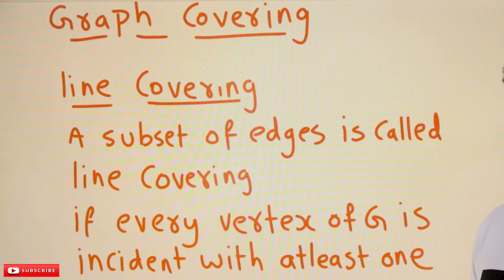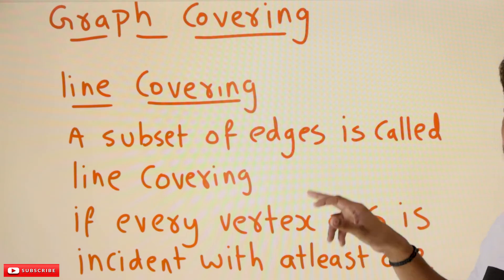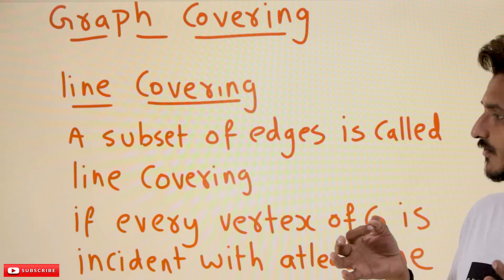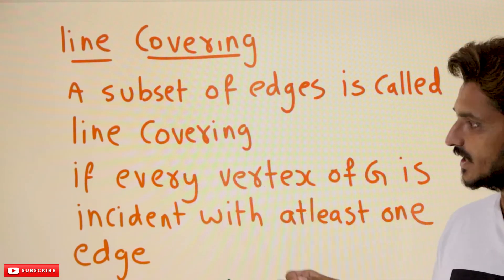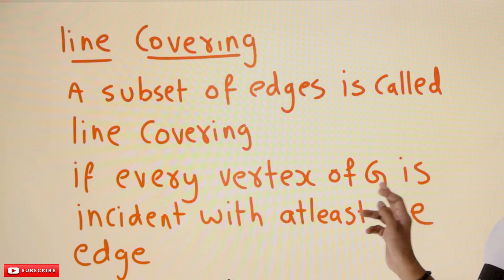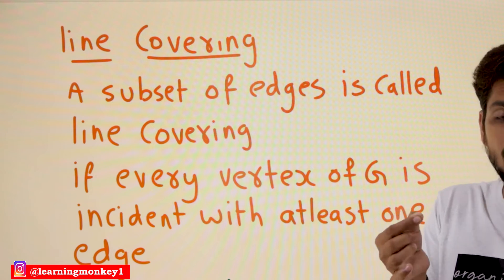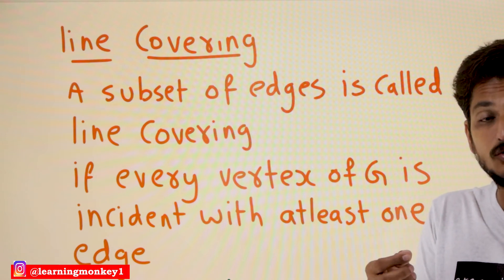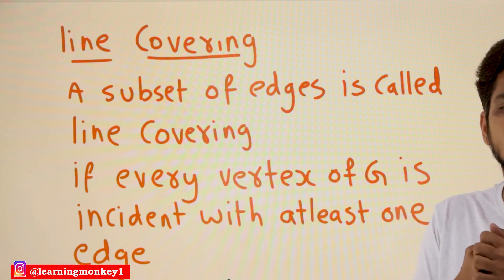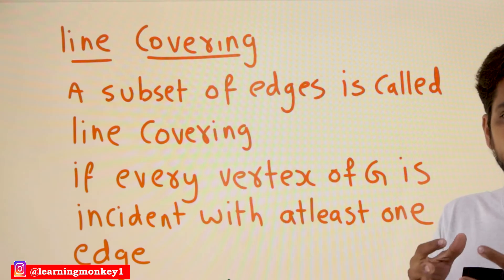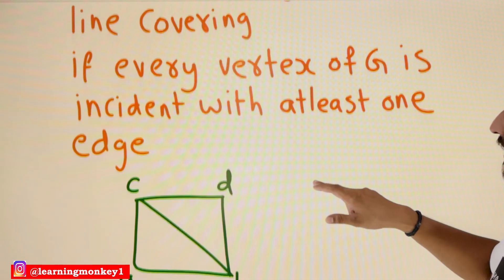Now the next concept: what does graph covering mean? We have two concepts to understand — line covering and vertex covering. Line covering means a subset of edges: you pick some subset of edges from the graph. We call that subset a line covering if every vertex of G is incident with at least one edge from the selected subset. Whatever edges we pick, any vertex you take should be incident with one of those edges.